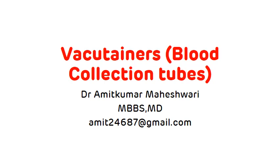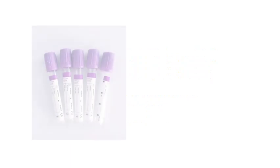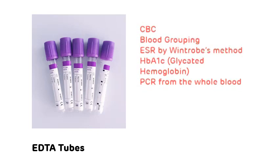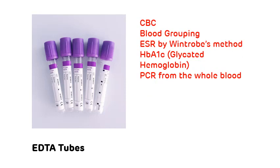The very commonly used vacutainer is the EDTA tube, which is lavender in color. It contains ethylene diamine tetra-acetic acid — that is EDTA. The use of the EDTA tube is that it is most commonly used for the collection of blood for CBC, that is Complete Blood Cell Count.